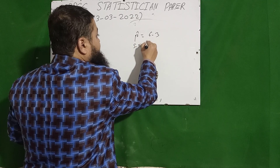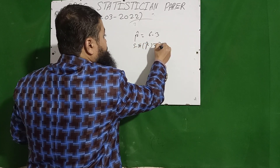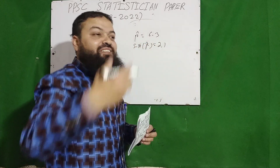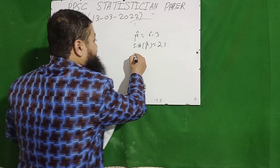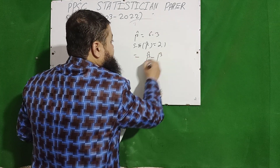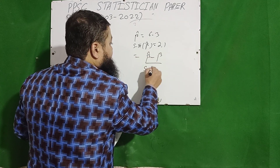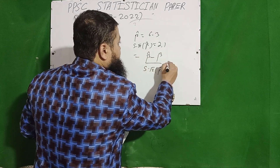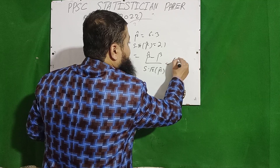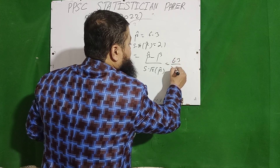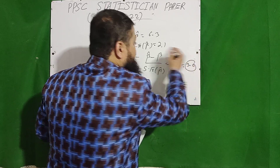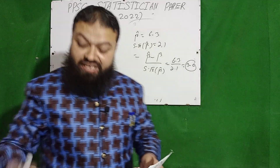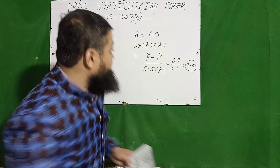The next question: β̂ = 6.3 and the standard error of β̂ = 2.1. The test statistic is (β̂ − β) / SE(β̂) = 6.3 / 2.1 = 3.0. That is the correct option.